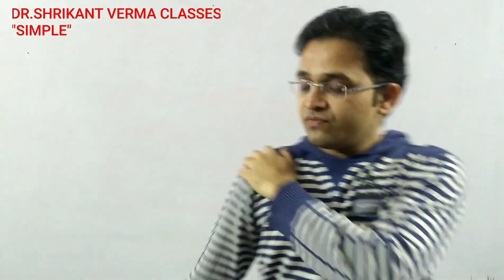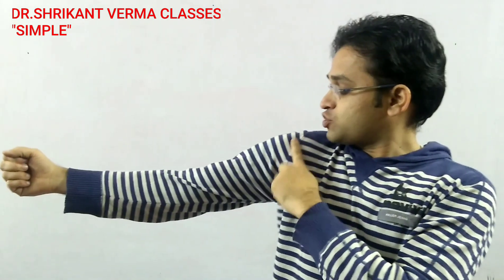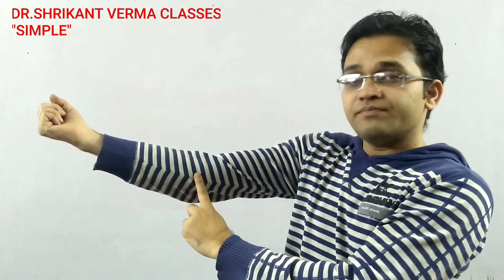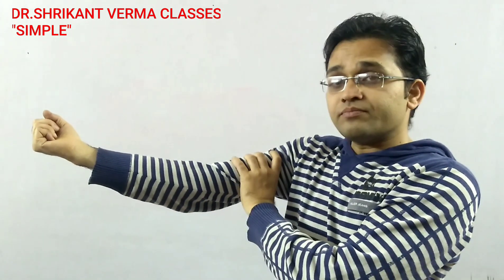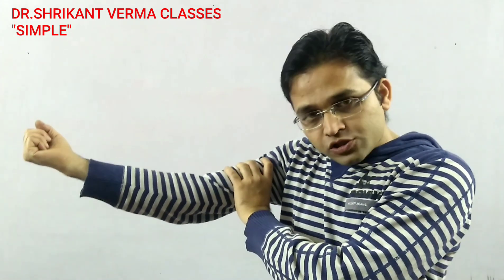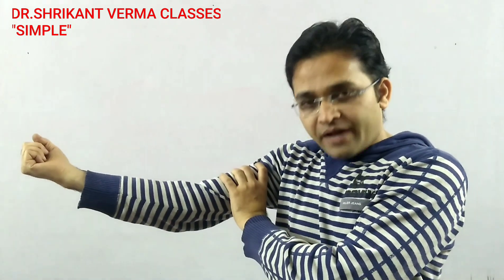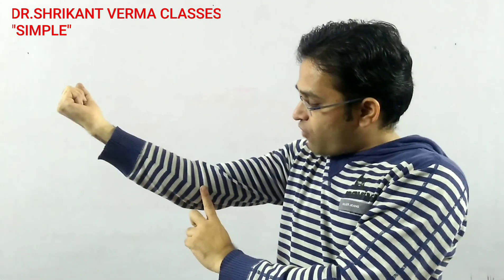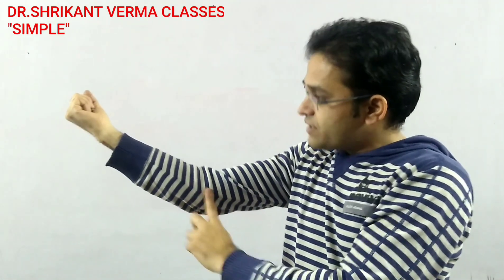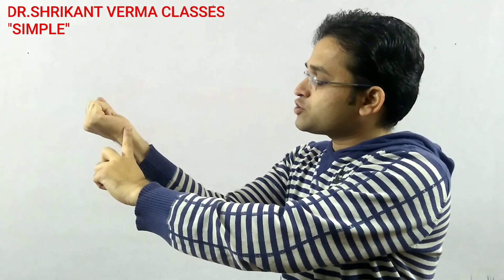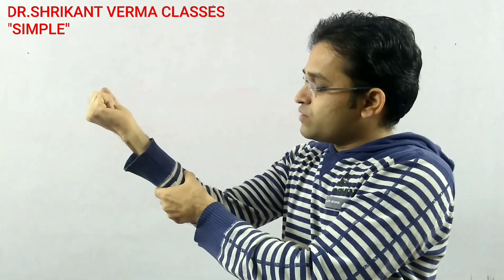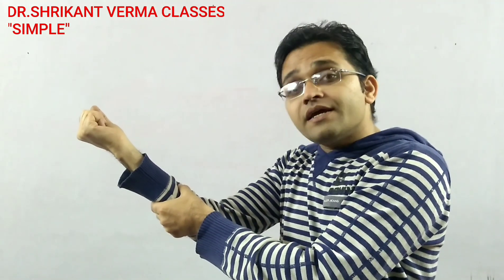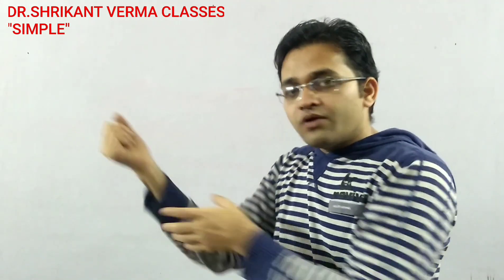The next part, situated from the shoulder joint up to the elbow joint, is known as the arm, also known as brachium. The next part, from the elbow joint up to the wrist joint, is known as the forearm, also known as anti-brachium.